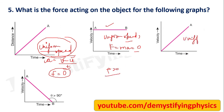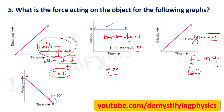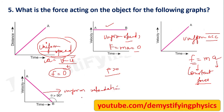This graph represents uniform acceleration — a constant value — so force also has a fixed constant value. The next graph shows uniform retardation, meaning acceleration is negative, so the force acting is also negative: a constant force but retarding in nature.